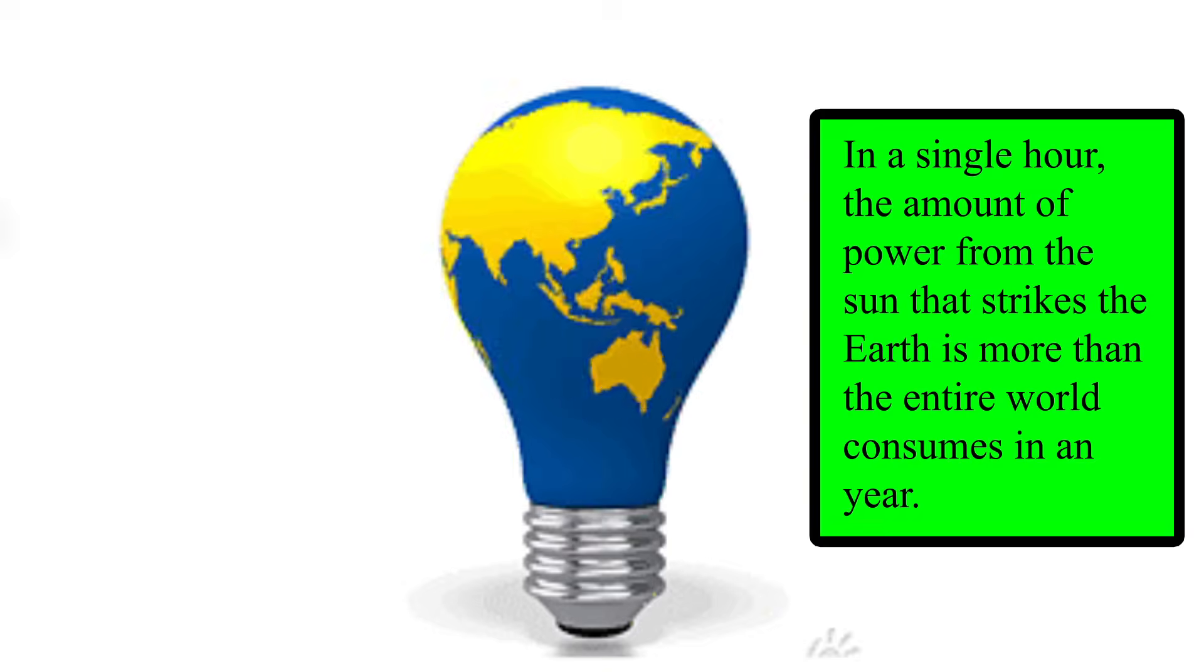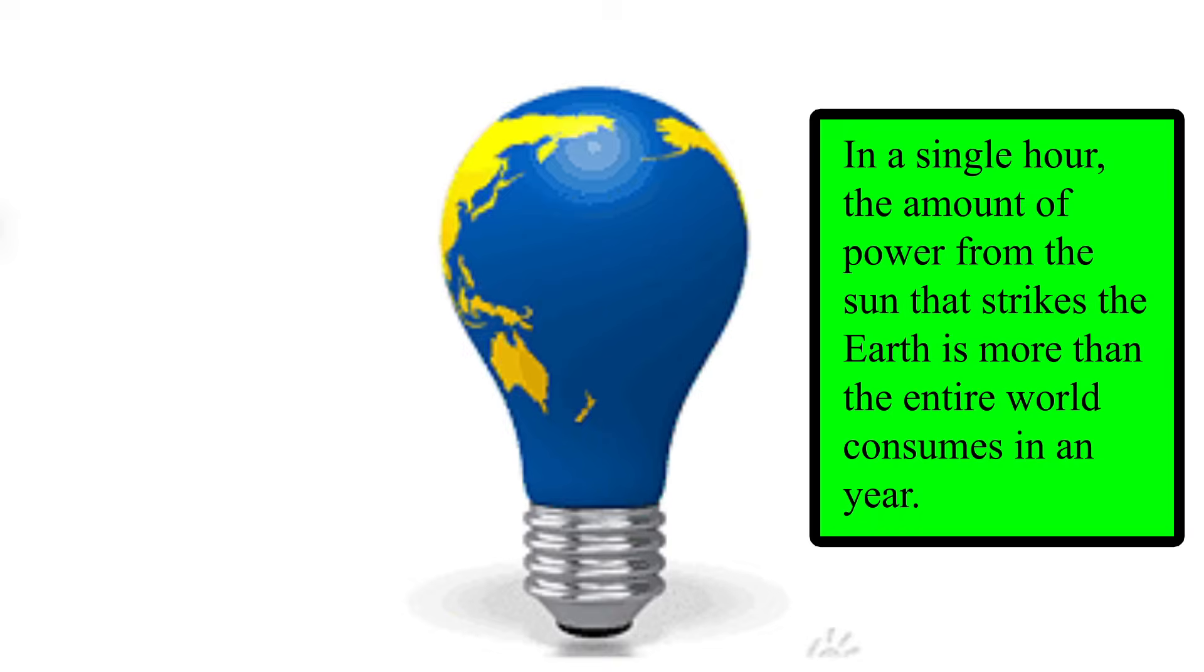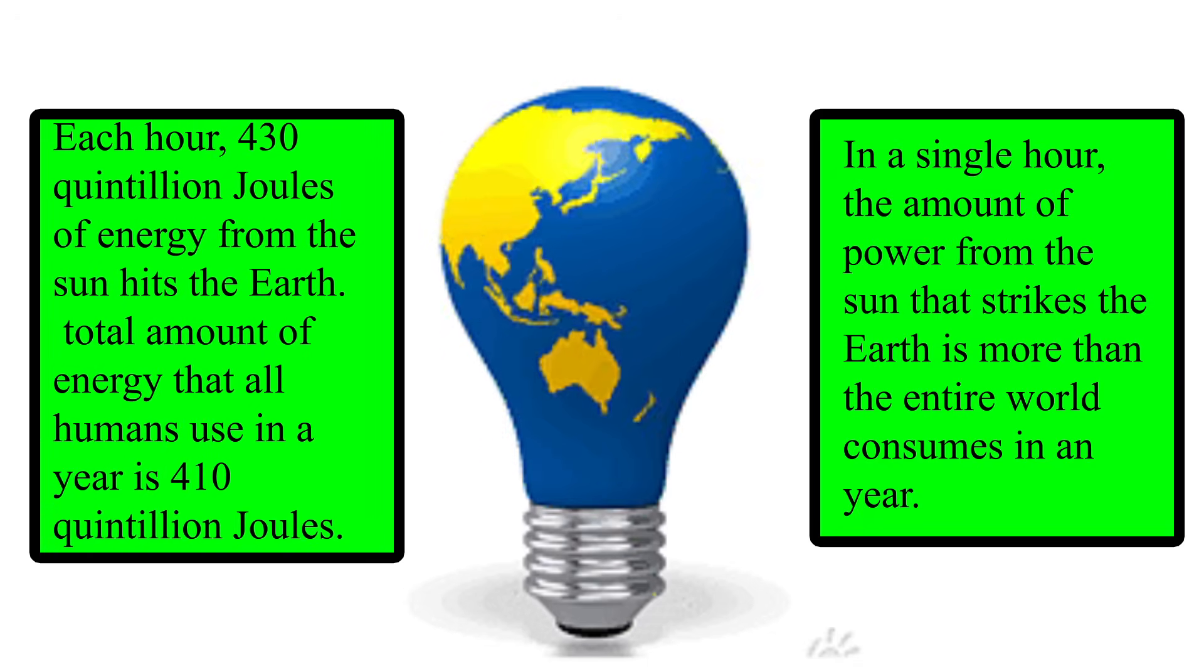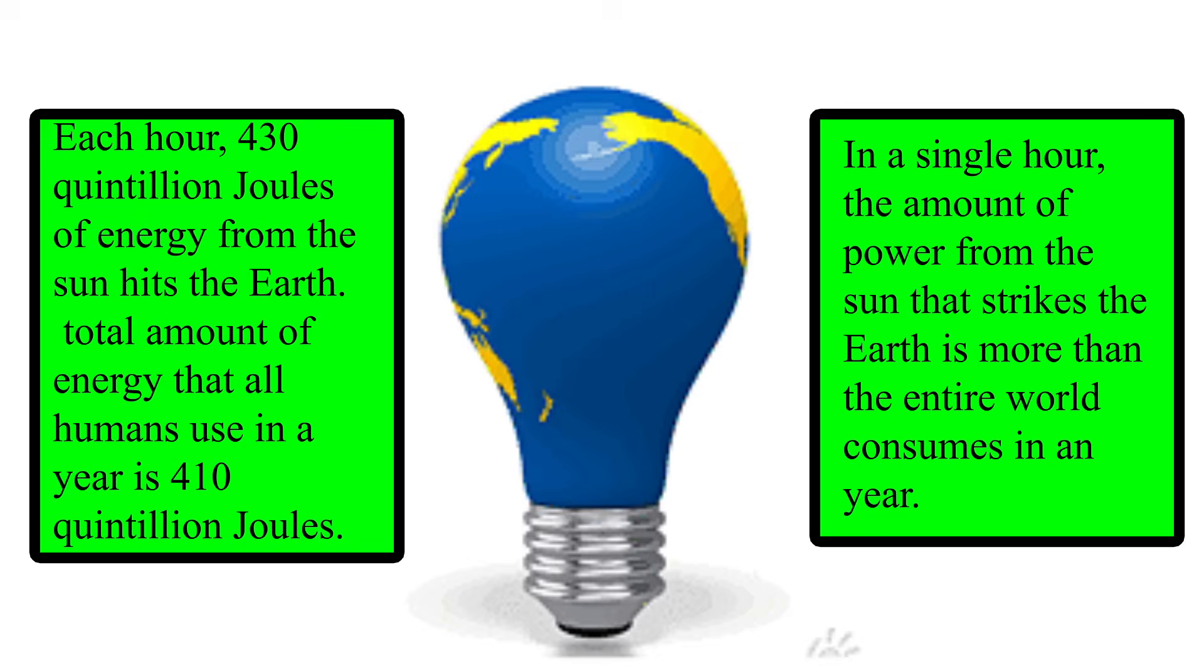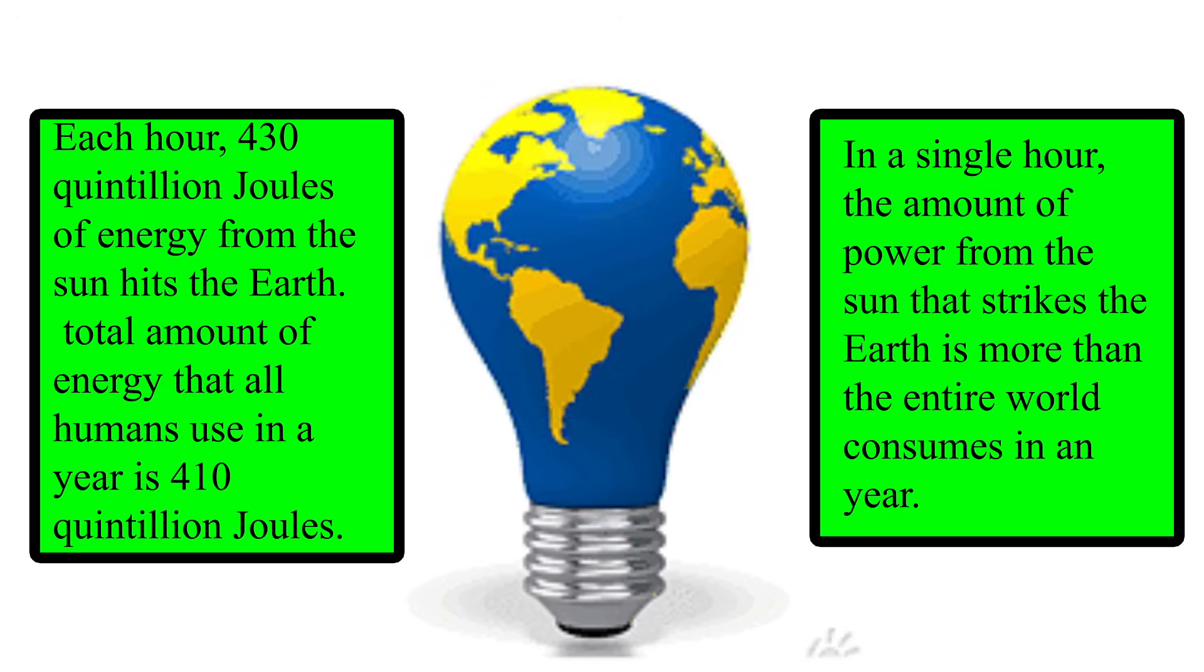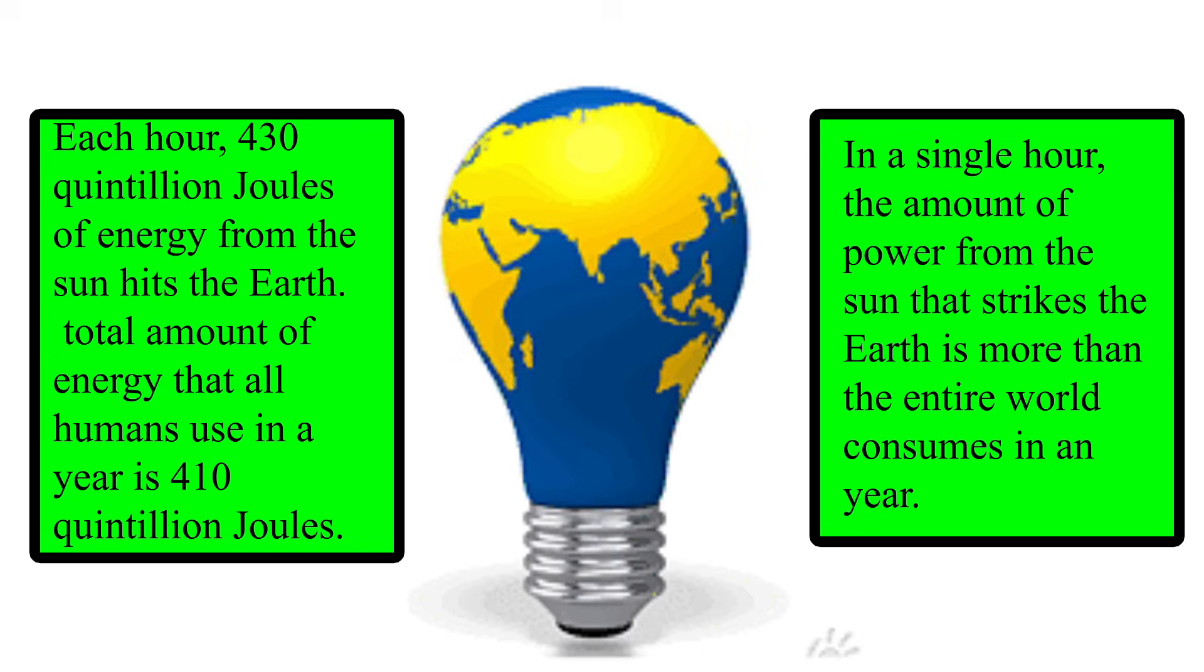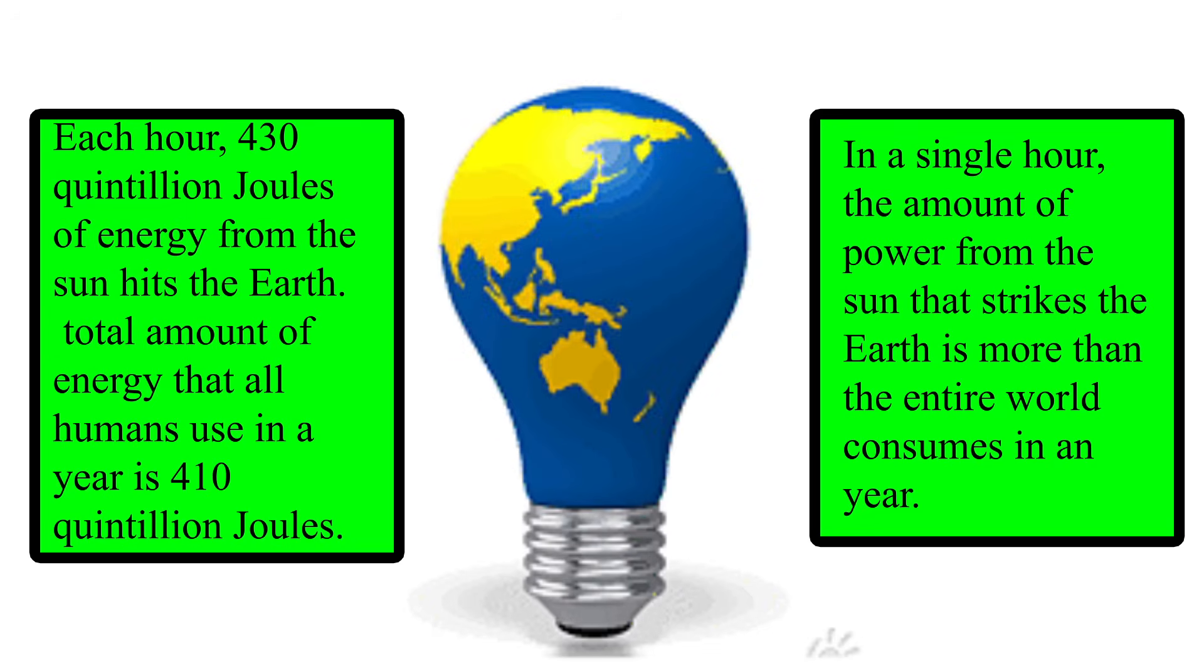In a single hour, the amount of power from the Sun that strikes the Earth is more than the entire world consumes in a year. To put that in numbers, each hour 430 quintillion joules of energy from the Sun hits the Earth. That's 430 with 18 zeros. In comparison, the total amount of energy that all humans use in a year is 410 quintillion joules.